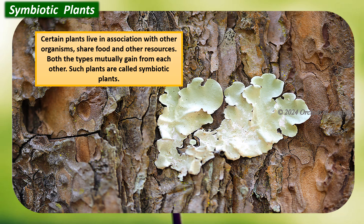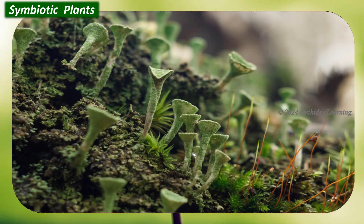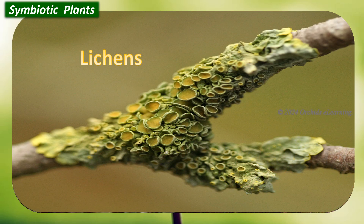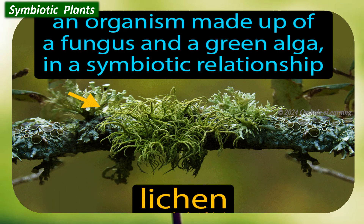Certain plants live in association with other organisms, share food and other resources, and both types mutually gain from each other. Such plants are called symbiotic plants, and the relationship is called symbiosis. Lichens are symbiotic associations between a fungus and microscopic chlorophyll-containing organisms — green algae. The algae provides nutrients to the fungus, and the fungus helps the algae to grow in harsh conditions.